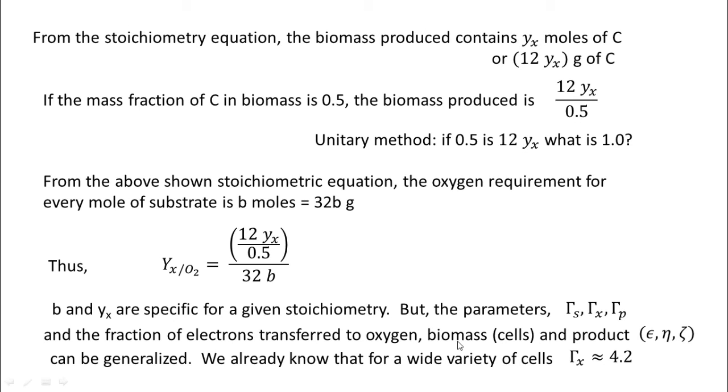But we said that the advantage of this method is that we have thumb rule values for certain quantities. Those certain quantities for which we have thumb rule values could be gamma_s, gamma_x, gamma_p, and the fraction of electrons transferred to oxygen, biomass or product: epsilon, eta and psi. These are the ones that can be somewhat generalized. We already know that for a variety of cells, gamma_x equals about 4.2.